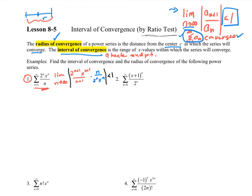Let's see how this pans out once we simplify. The 2 to the n plus 1 over 2 to the n leaves just a 2. The x to the n plus 1 over x to the n leaves just an x. Then we have n over n plus 1. The limit as n goes to infinity of n over n plus 1 equals 1, so it just gets multiplied in. So our interval of convergence is going to be the absolute value of 2x less than 1.